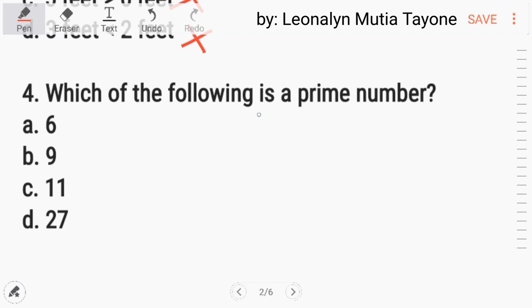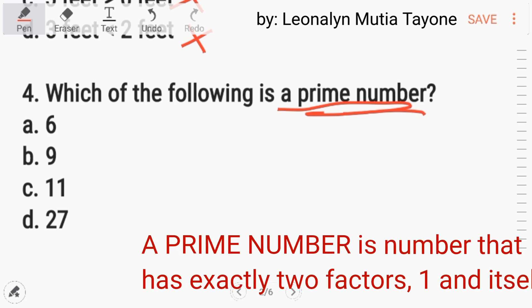Number 4: Which of the following is a prime number? First, what is a prime number? A prime number is a number that has exactly two factors, one and the number itself. Ito, mayroon siyang factor aside sa one at saka six, mayroon siyang two at saka three. Si nine naman, aside na ang factor niya ay one at saka nine, mayroon din siyang three.